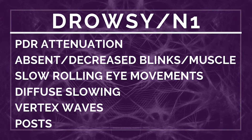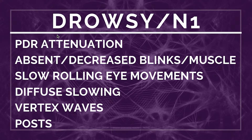The first finding is the attenuation of the posterior dominant rhythm. As we saw in the last videos, the PDR is typically present when you're awake and relaxed with your eyes closed. As you become drowsy the PDR starts disappearing or attenuating — you go in and out of sleep and your PDR shows up, then disappears, then pops up again. It can also get a little bit slower as drowsiness progresses.